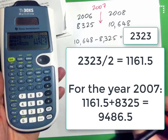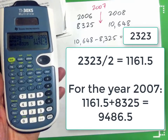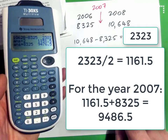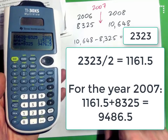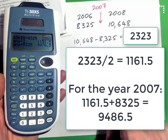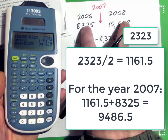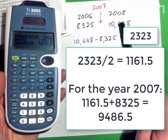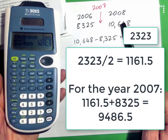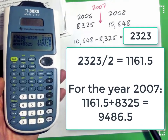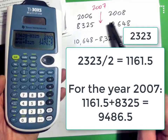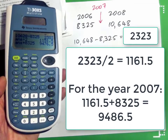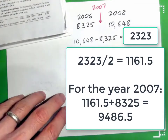So 9,476.5 is our estimate for the number of complaints in 2007 using interpolation. Of course it could have been way higher or way lower than that — we don't know. But that's a good guess based on the information given. We were given the number for 2006 and 2008, so halfway between is a good guess for 2007.